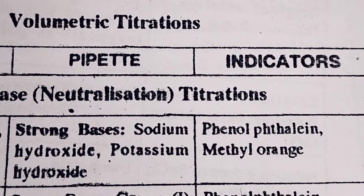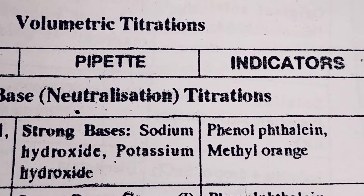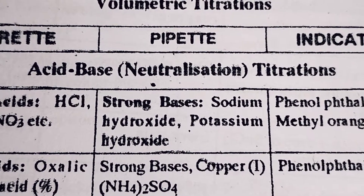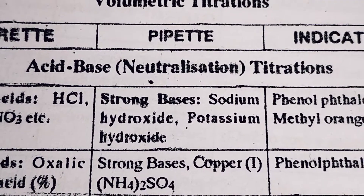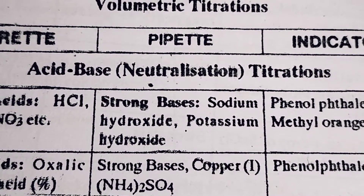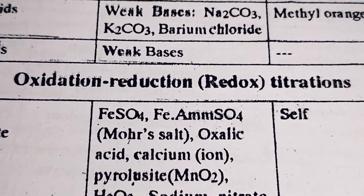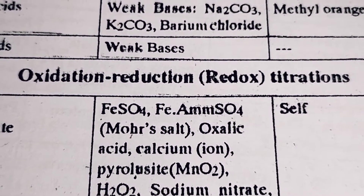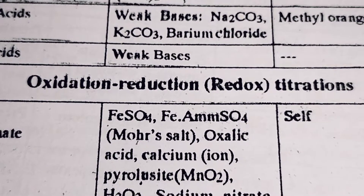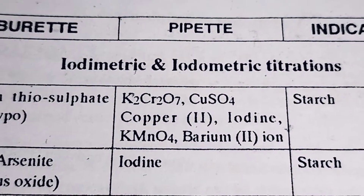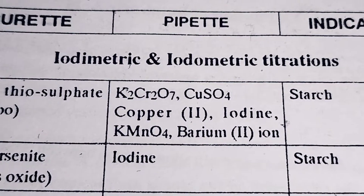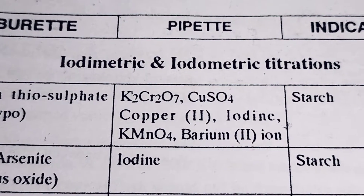Let's take a look at the types of titration and the types of indicator. The first type is acid-base titration — this is neutralization titration. Another type is oxidation-reduction titration. We also have iodometric titration, which is another type of titration.